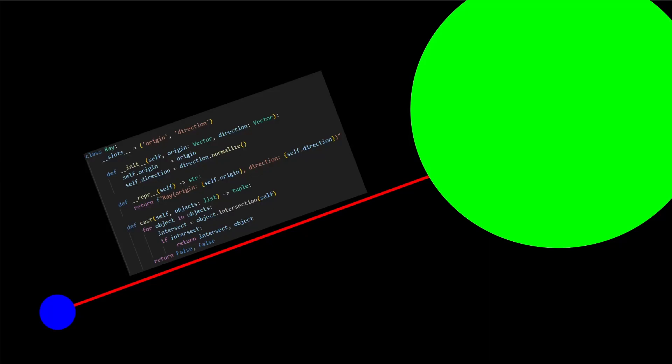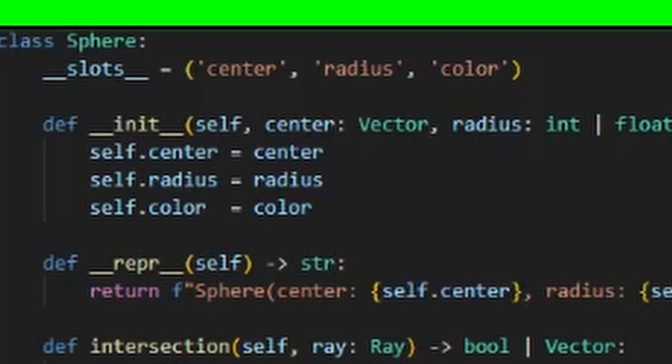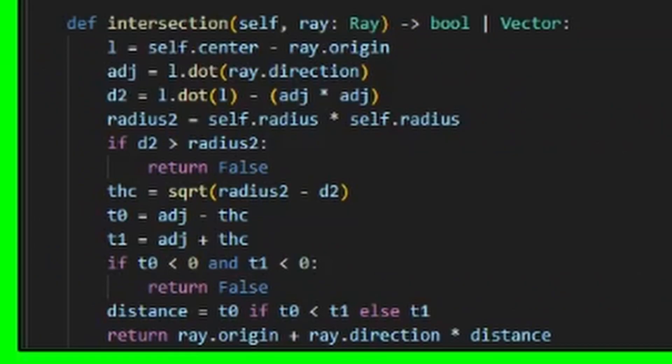Let's take a ray and a sphere. The ray has an origin and a direction, the sphere has a position and a radius. To find out if the ray hits the sphere and where, we need to do some math.